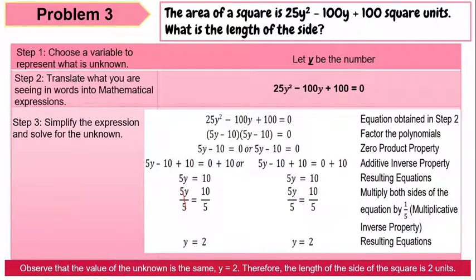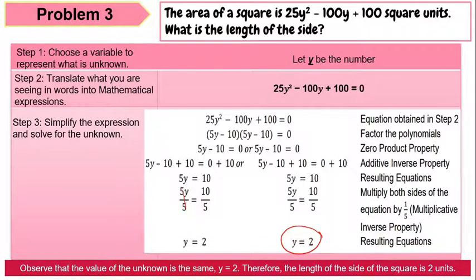Both factors give the same value: y equals 2. Therefore, the length of the side of the square is 2 units.